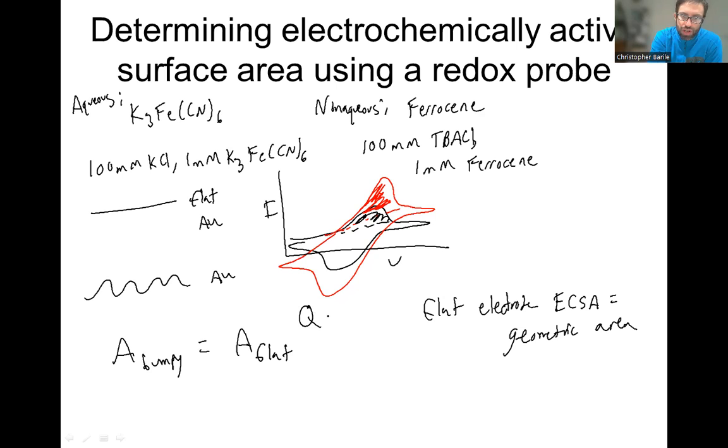It would just be equal to this charge of bumpy over charge of flat. So this red area divided by the blue area. If this red area was twice as big as the black area, blue area, red was twice as big as this black area.